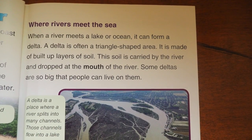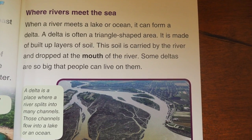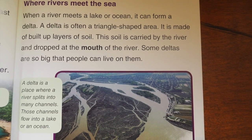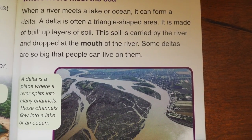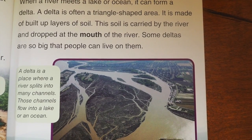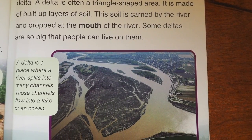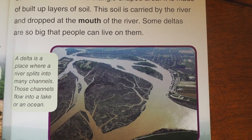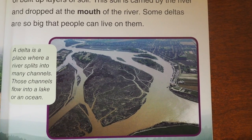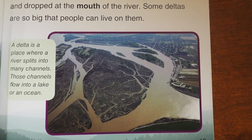When a river meets a lake or ocean, it can form a delta. A delta is often a triangle-shaped area made of built-up layers of soil. The soil is carried by the river and dropped at the mouth of the river. Some deltas are so big that people can live on them.